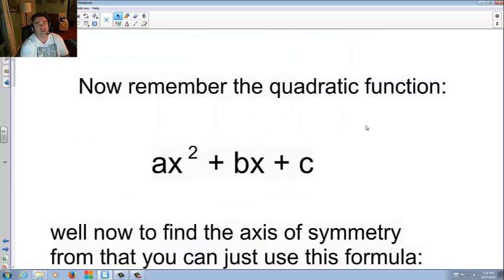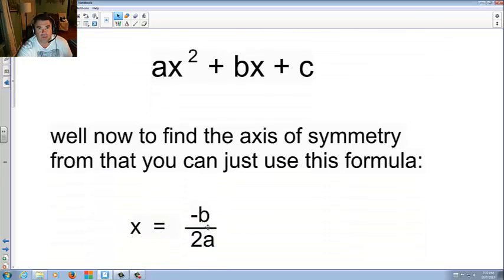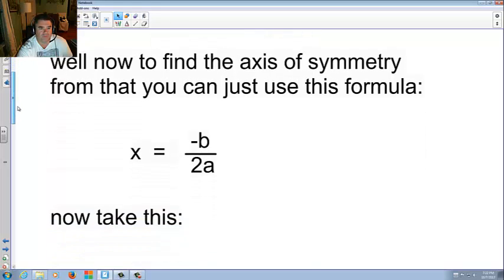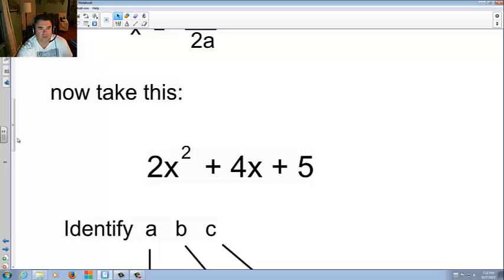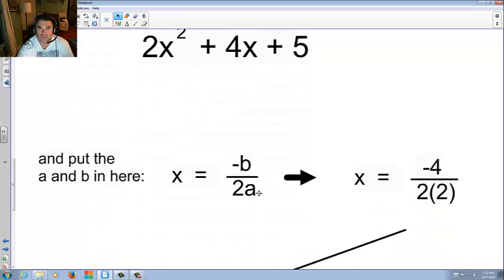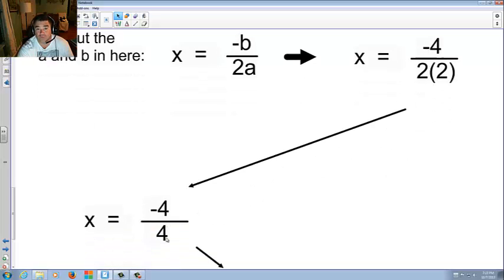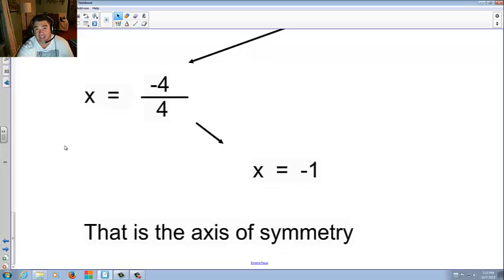Now remember that the quadratic function, ax squared plus bx plus c. Well now to find the axis of symmetry from that, you can just use this formula: x equals negative b over 2a. In other words, find the number that's here and make it a negative, or if it's a negative, it becomes a positive. And take 2 times this first coefficient. So let's say I have this here. So simply put a, b, c, a is 2, b is 4, c is 5. And we're going to do negative b over 2a. So negative b, which is negative 4, over 2 times a, or 2 times 2. Negative 4 over 2 times 2, and negative 4 over 4, which is negative 1. That is the axis of symmetry.